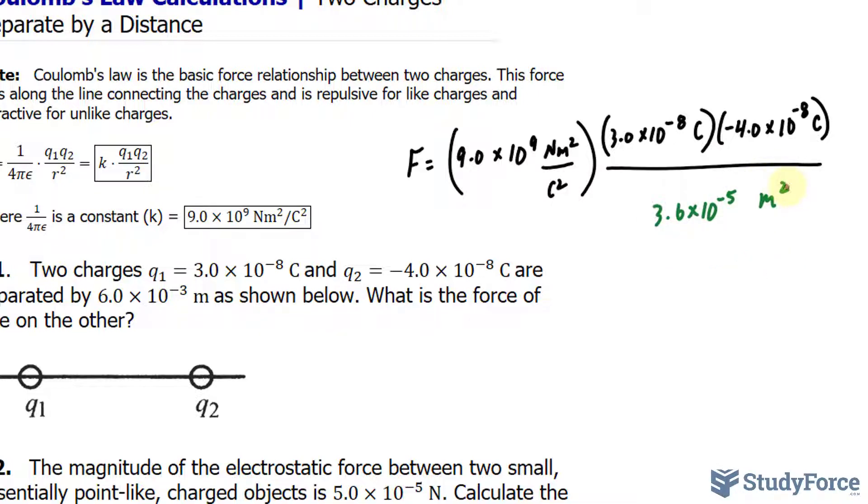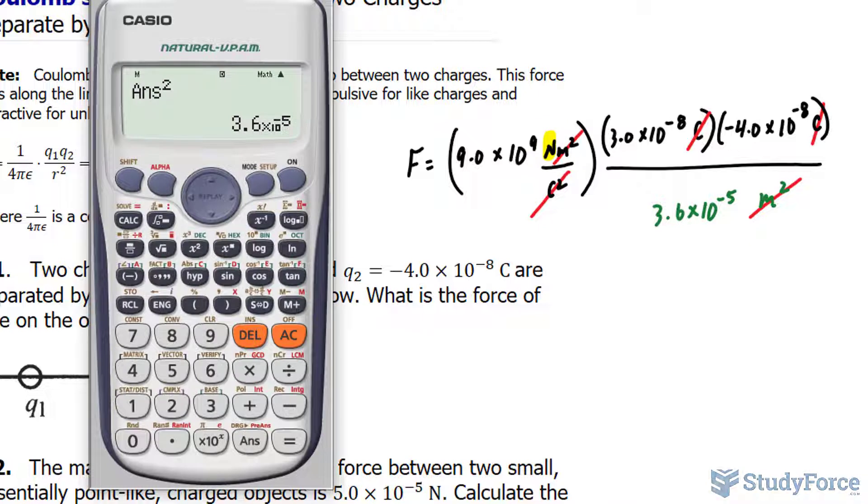Now you can see the units easily cancelling out. Meters squared and meters squared will cancel out here. This coulomb and that coulomb will cancel out with these two. And you're left with newtons, which is expected since this is a force.